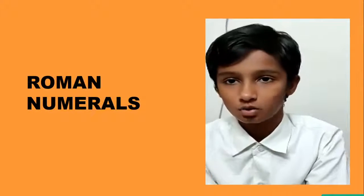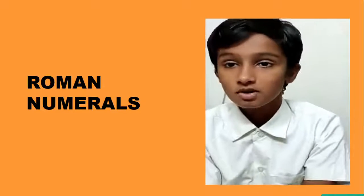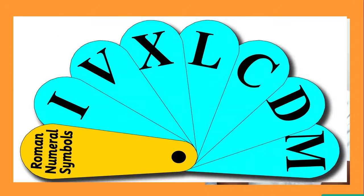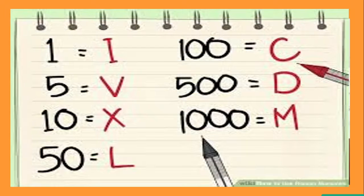I am Advik Ramachandran of class 4B. Let me share with you one of the most ancient numerical systems — Roman numerals. Roman numerals originated, as the name suggests, in ancient Rome. There are seven basic symbols: I, V, X, L, C, D, and M. The first usage of these symbols began showing up between 900 and 800 BC. The numerals developed out of a need for a common method of counting, essential to communication and trade. These symbols stand respectively for 1, 5, 10, 50, 100, 500, and 1000 in the Hindu-Arabic numeral system.